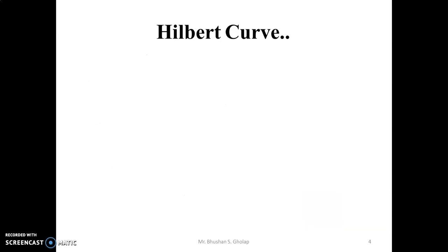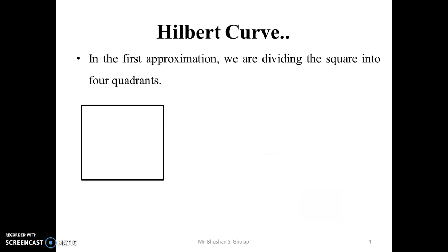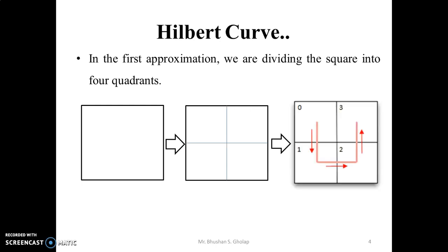In the first approximation of Hilbert curve, we are dividing the square into four quadrants. And then drawing the curve which connects the center points of each quadrant. So, we first divide the square into four quadrants, and after that, we join the center point of each quadrant using U shapes or curves. This is the first approximation of Hilbert curve.